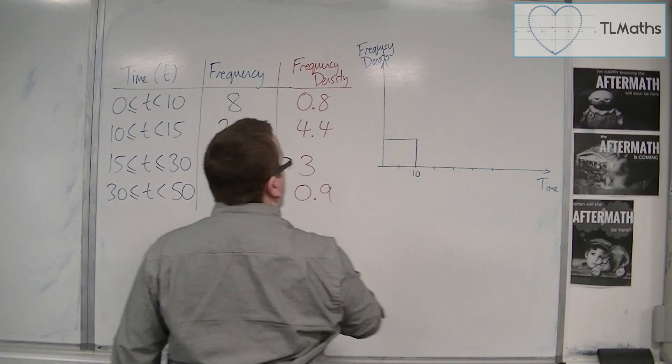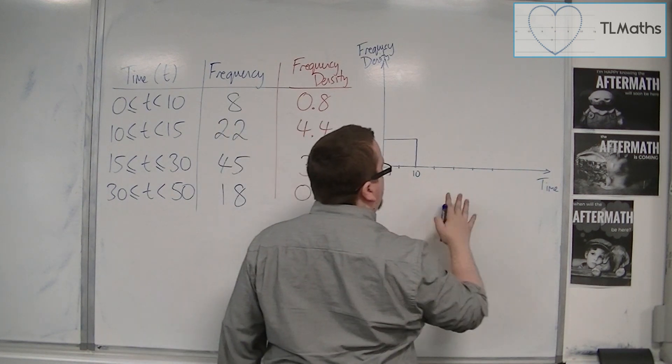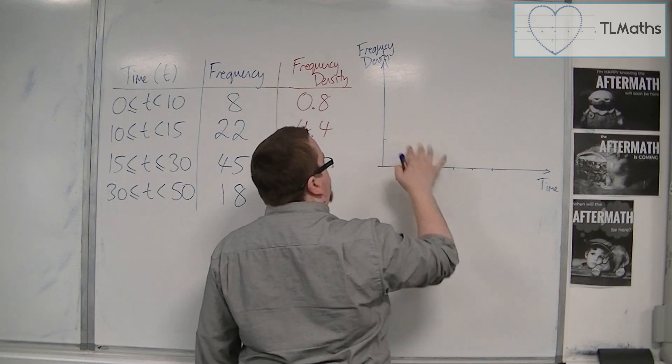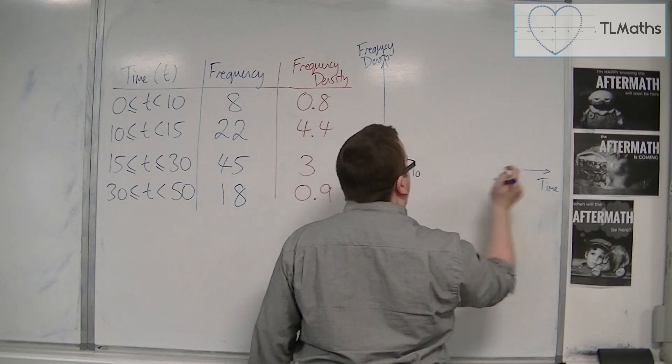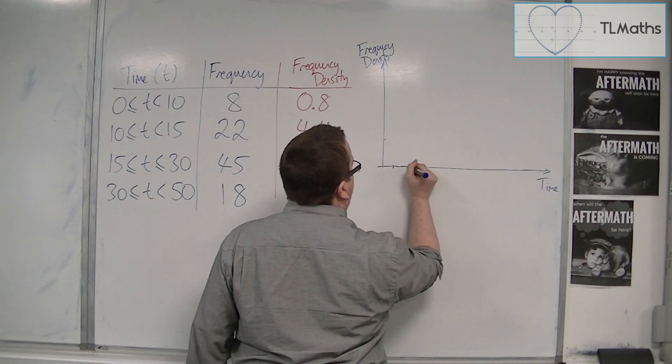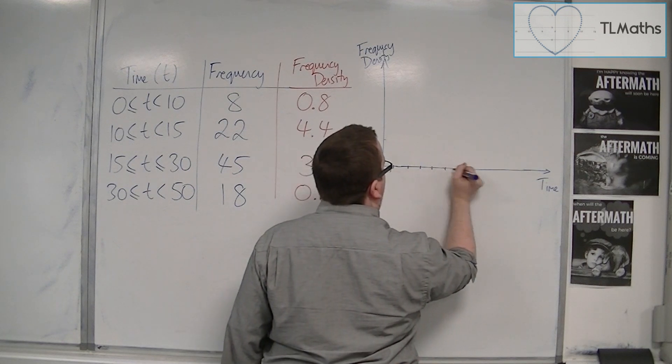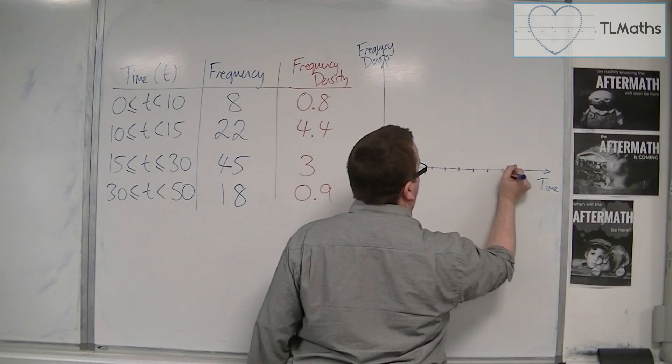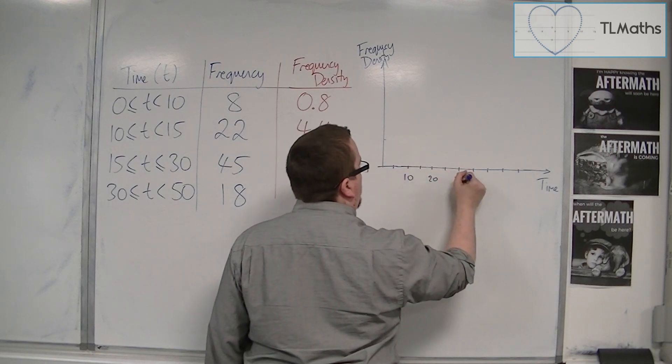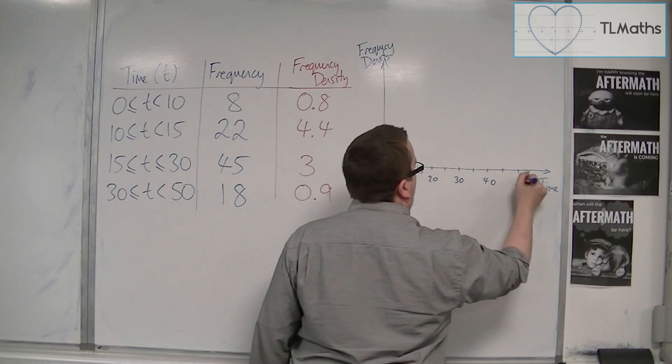So 0.8 from 0 to 10. So let's go up in 5s here. Let's make sure I've got enough. I'm going up to 50. That's probably too wide a gap. Let's try this again. Should have thought this before. 5, 10, 15, 20, 25, 30, 35, 40, 45, 50. That'll do. So 10, 20, 30, 40, 50.